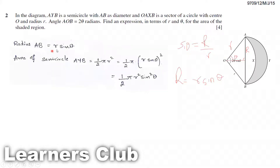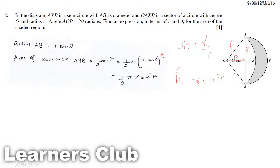The radius of the semicircle is R sin theta. The area of a full circle is πR², so the area of the semicircle is half of that: ½π(R sin θ)². Squaring R sin theta and simplifying, we get ½πR²sin²θ.